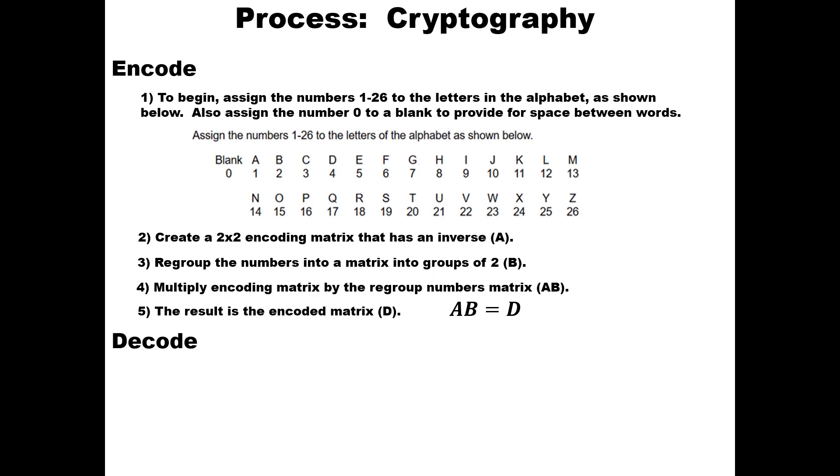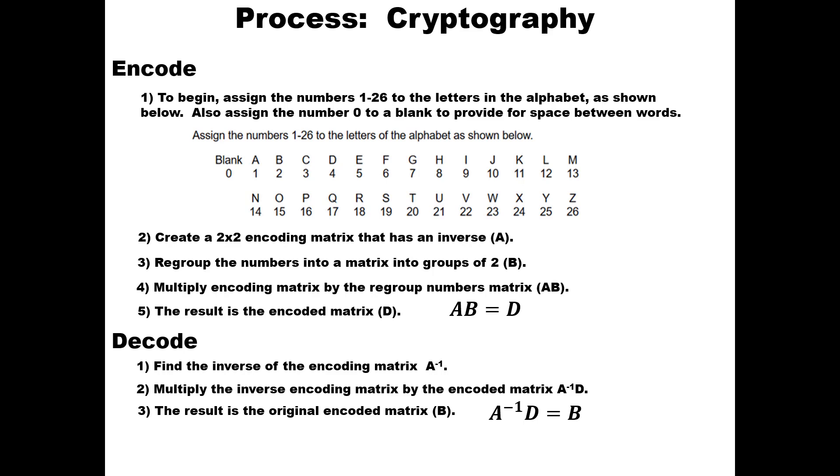So how do we decode it? First we need to find the inverse of the encoded matrix, we're going to call that A inverse. Then we're going to multiply the inverse encoded matrix by the encoded matrix D, so we're going to have A inverse times D. The result is the original encoded matrix B. Finally, we're going to match the letters and the numbers to figure out what is that secret message.